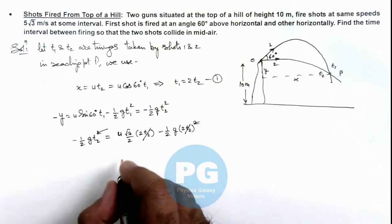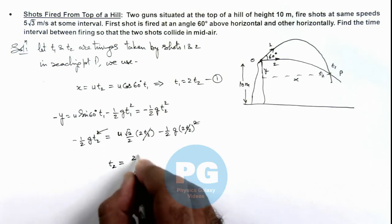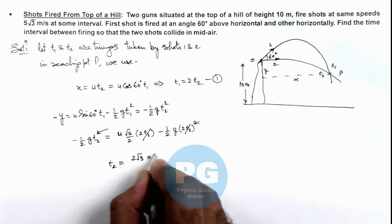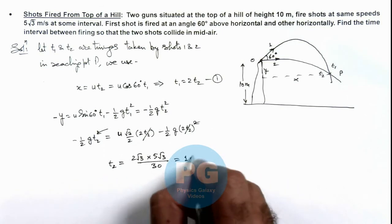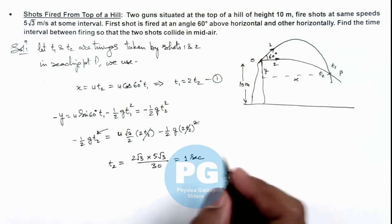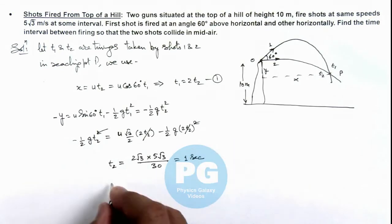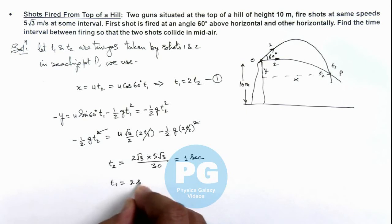The remaining terms on simplifying we are getting t2 is equal to 2 root 3 multiplied by 5 root 3 divided by 30, and that is equal to 1 second. So the value of t2 we are getting here is 1 second. That means the value of t1 is equal to 2 second.